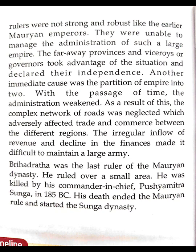Brihadratha was the last ruler of the Mauryan dynasty, ruling over only a small area. He was killed by his commander-in-chief Pushyamitra Shunga in 185 BC. His death ended the Mauryan rule and started the Shunga dynasty.